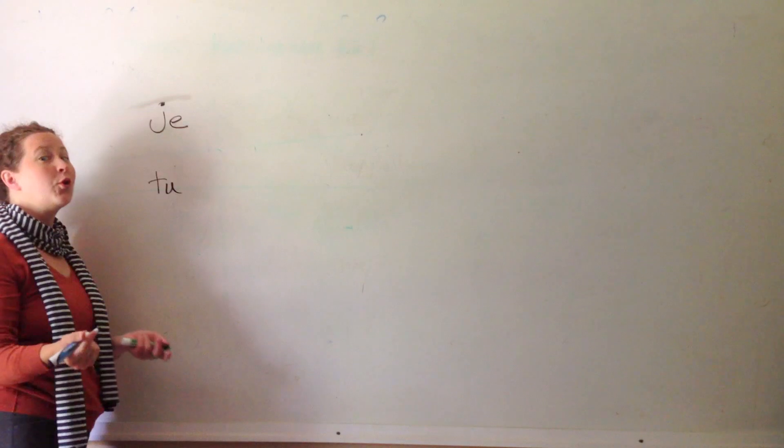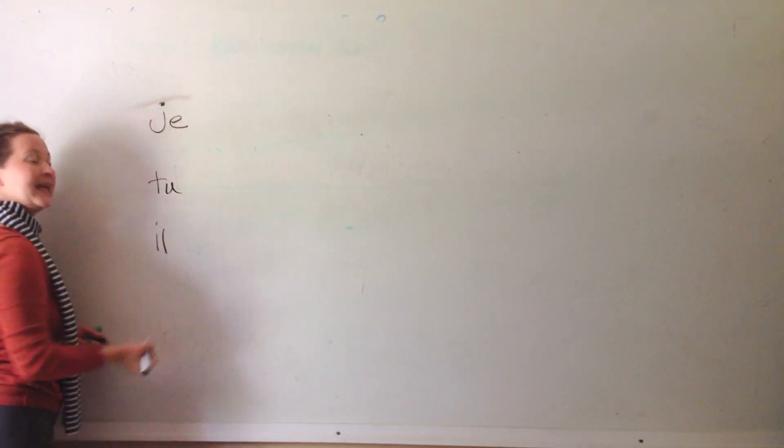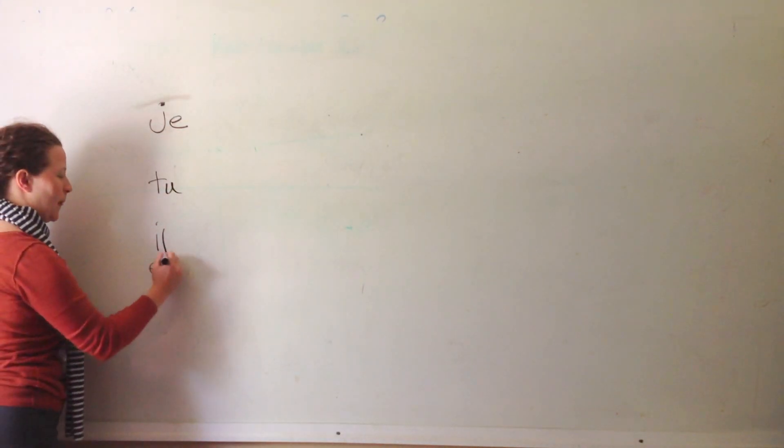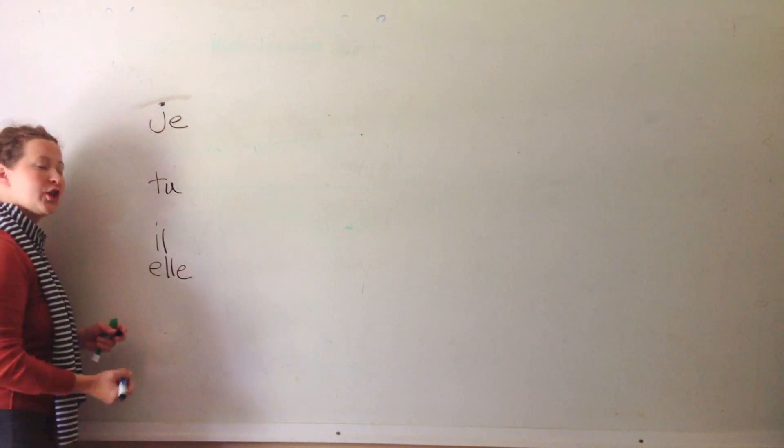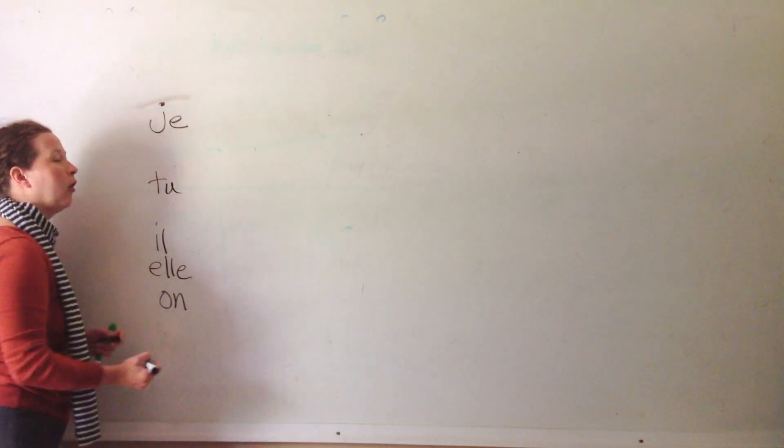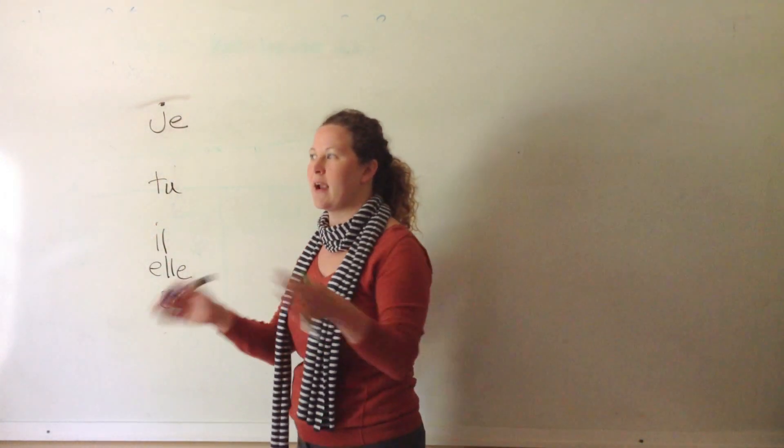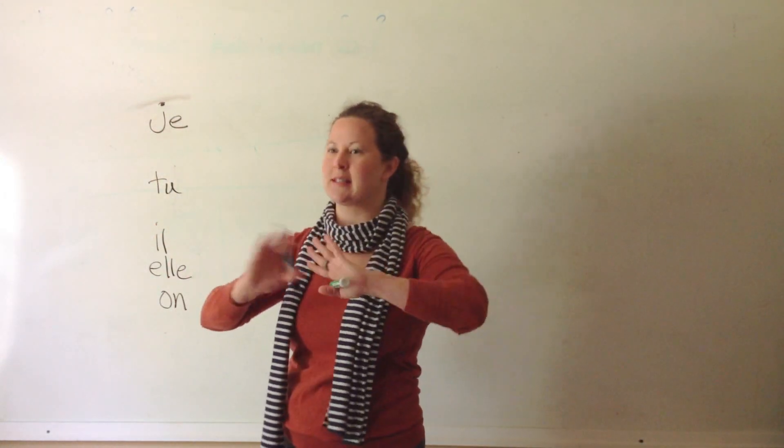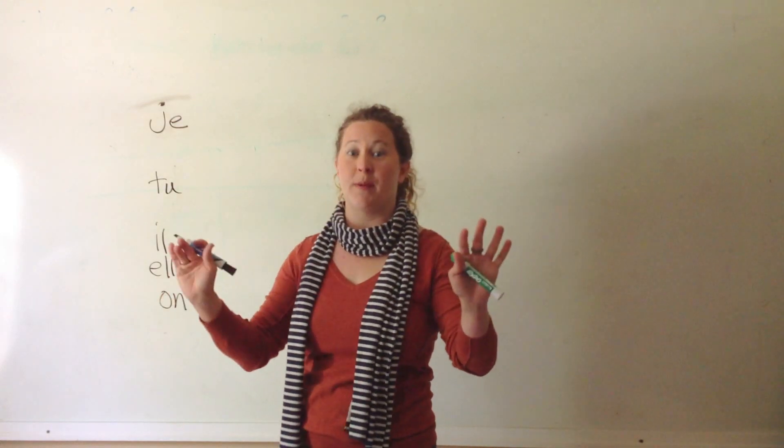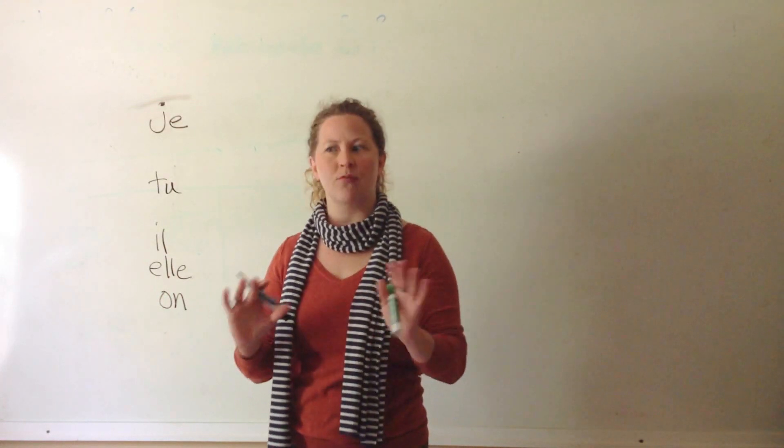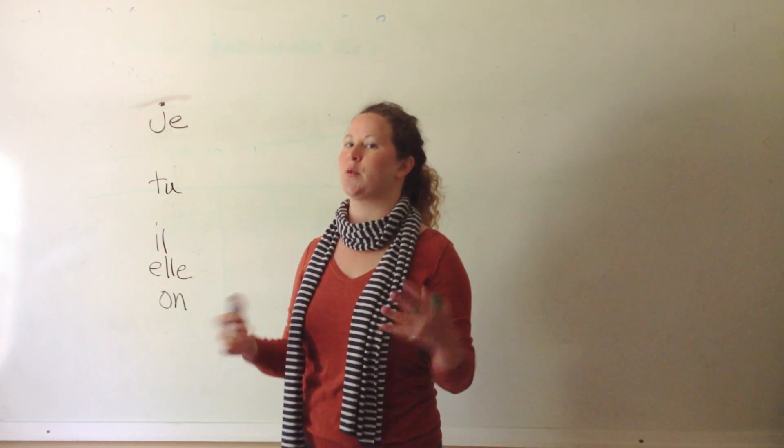Tu. Informal, you. Il. He. Elle. She. On. One. The French don't use it. They use on. It does not have any gender, which means it's not masculine or feminine. And it's completely neutral. And in French, everything has gender. So, we'll go over that in a second.